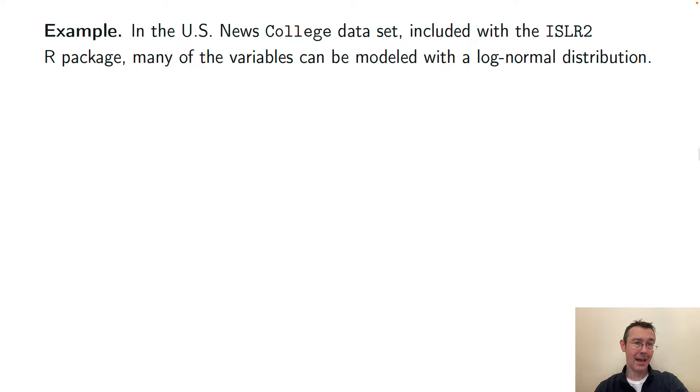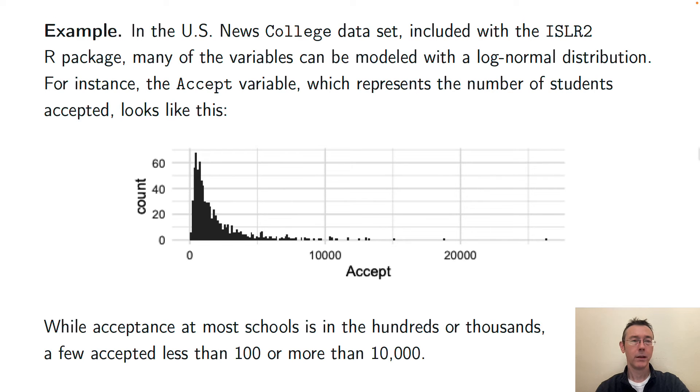Before we do any math, and I'll keep the math to a minimum, before we do any code, let's just run through a little bit of an example to try and build some intuition here. I'm thinking about the College data set which is included in the ISLR2 R package, and most of the variables in that set can be modeled with a log-normal distribution. Let's focus in on the Accept variable that represents the number of students accepted, I think it was in 1993, at something like 777 US colleges.